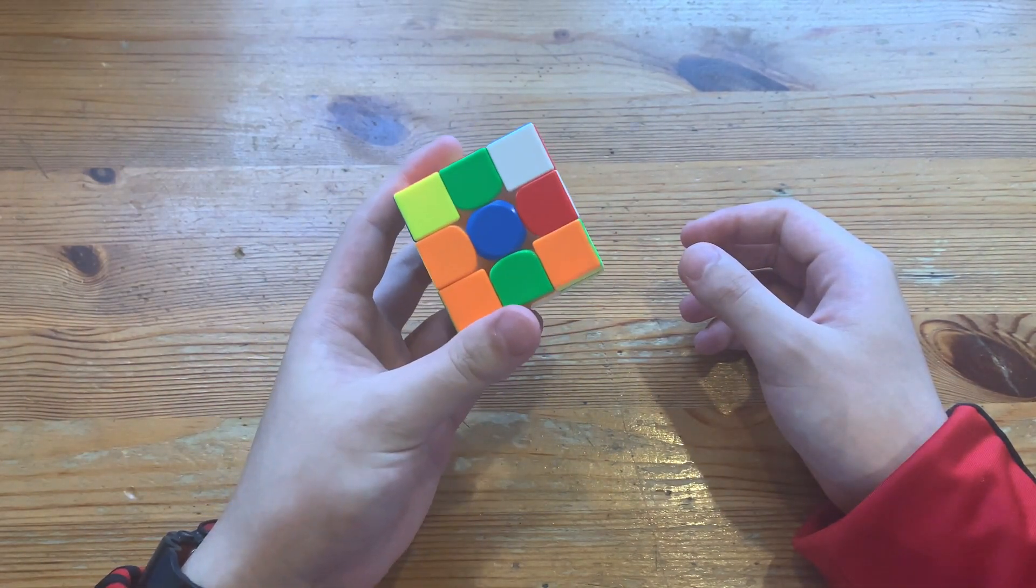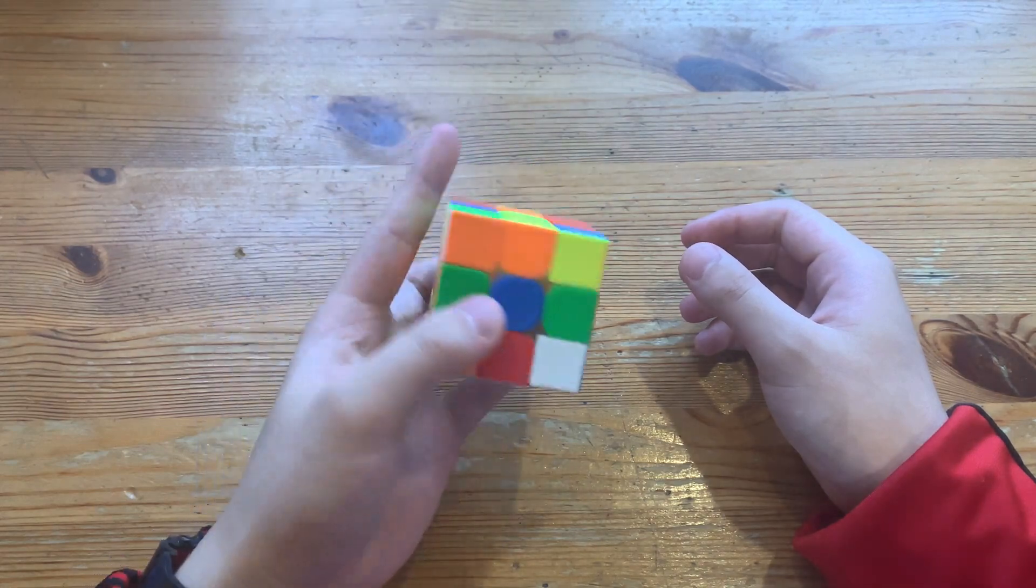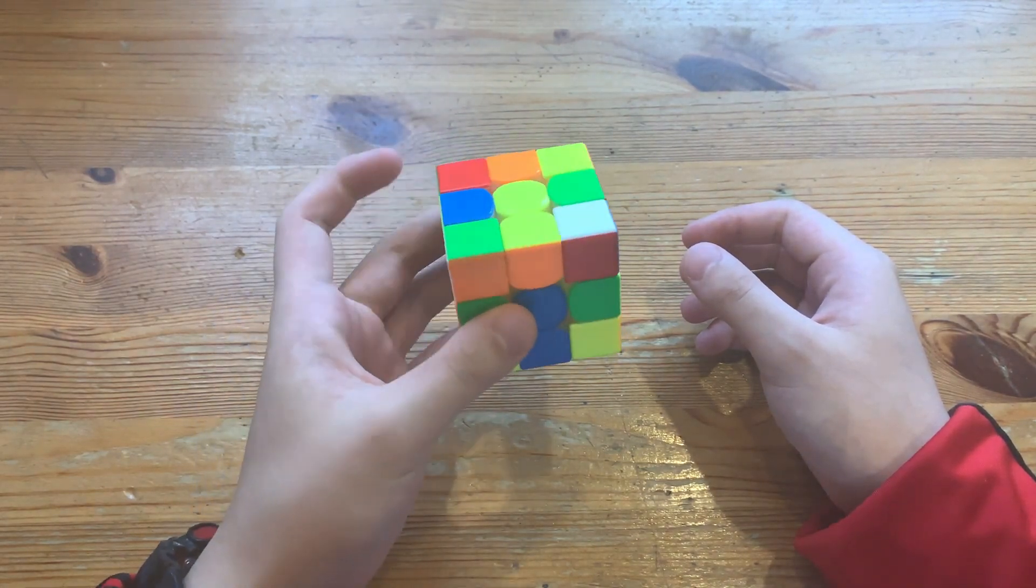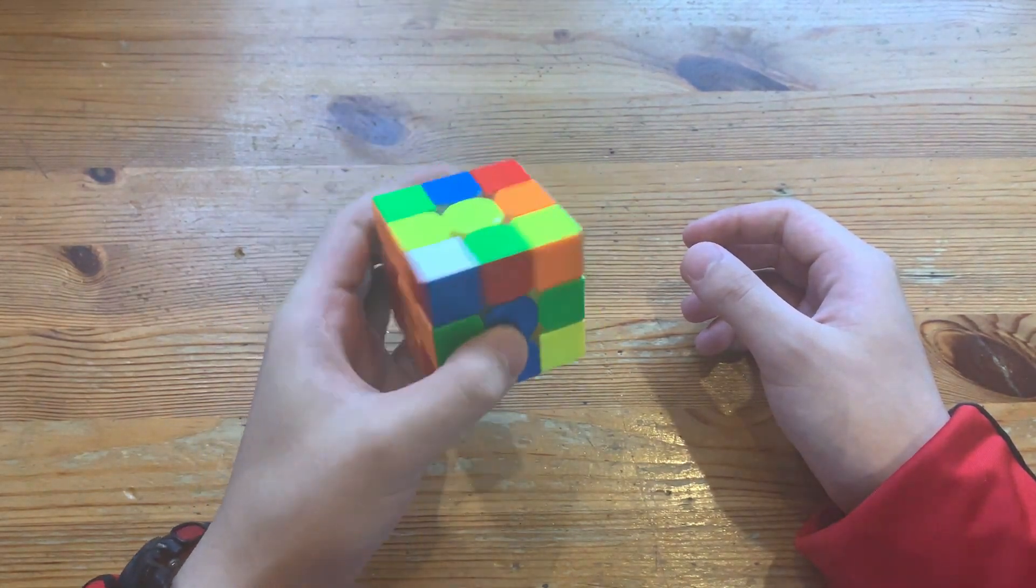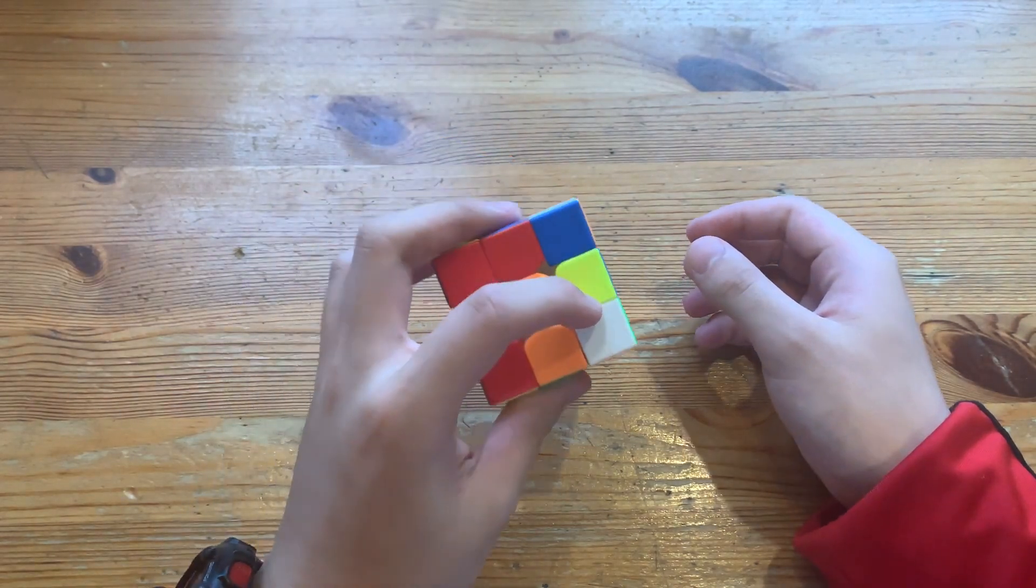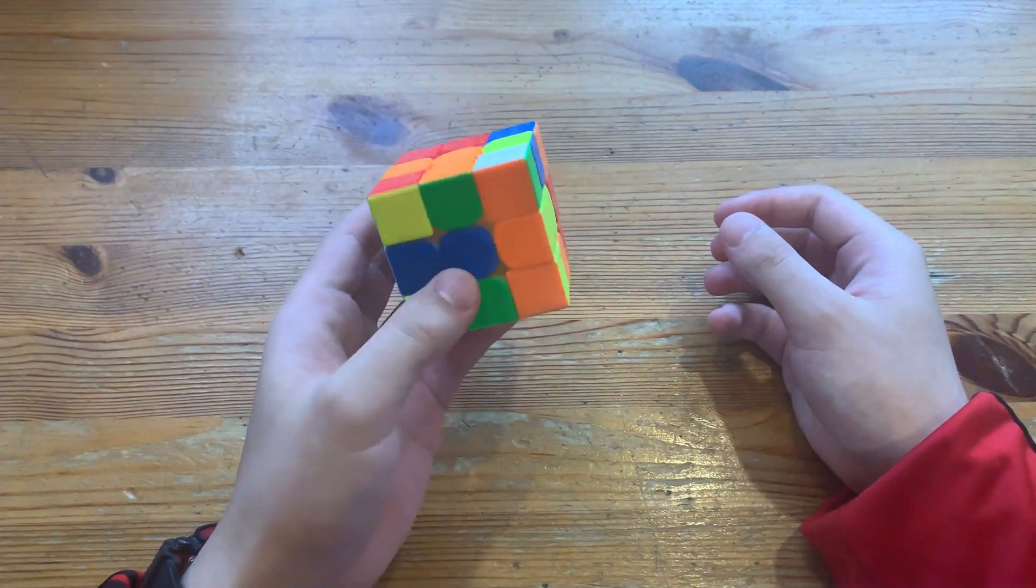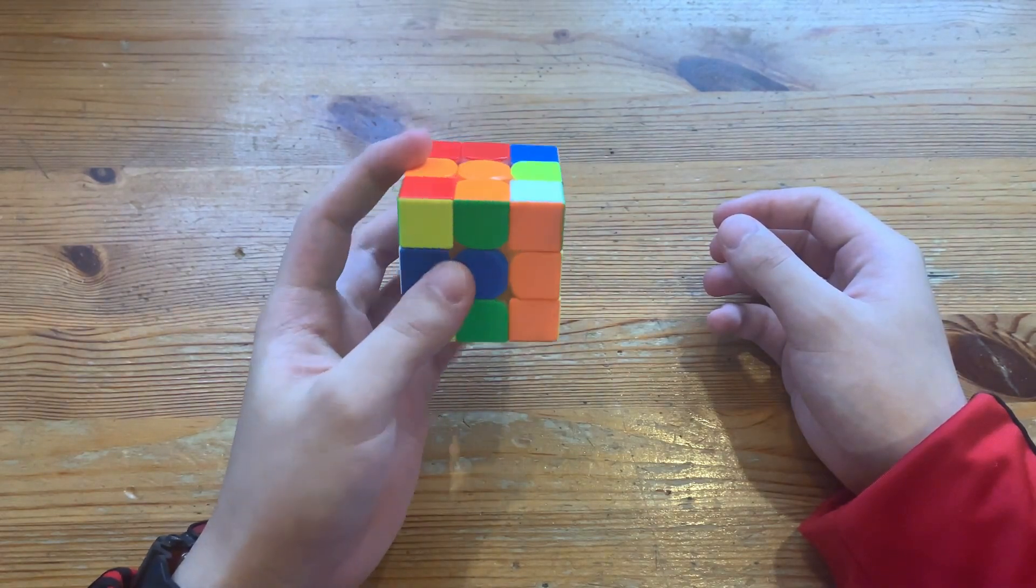First pair - and this pair which he inserted into the back like that. And this pair he could have just done by rotating here and doing R U like that.